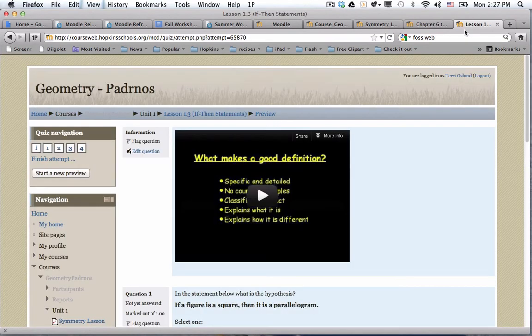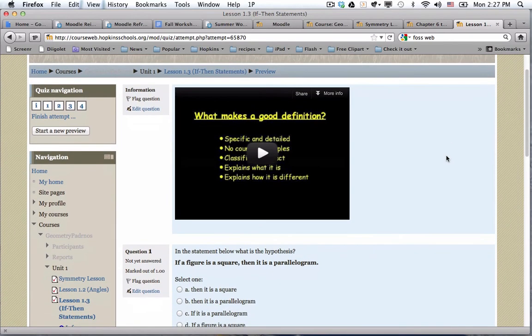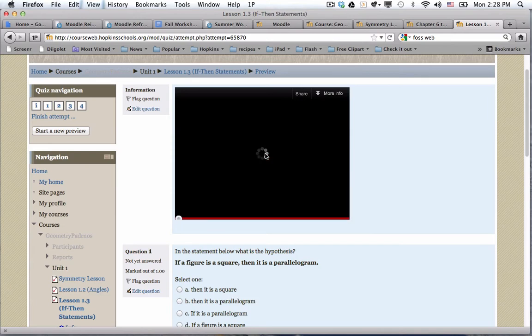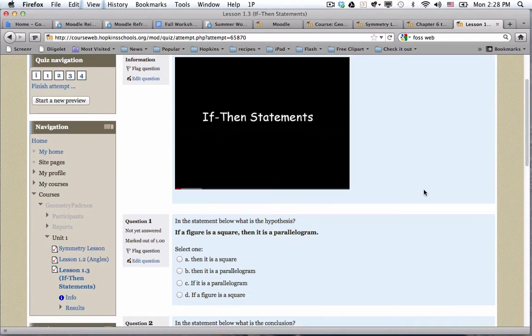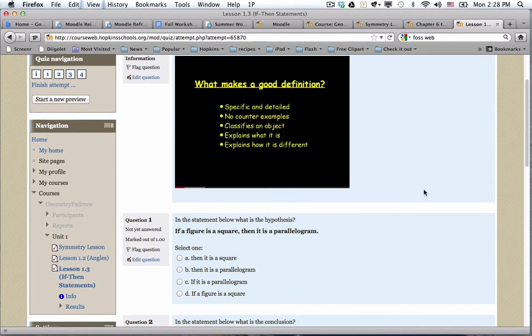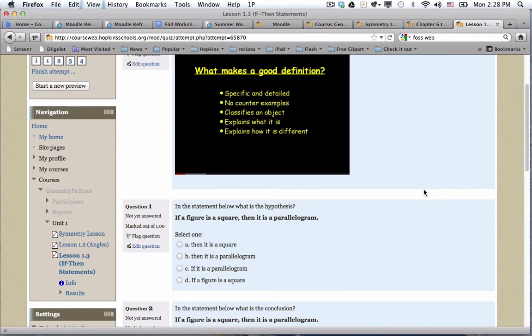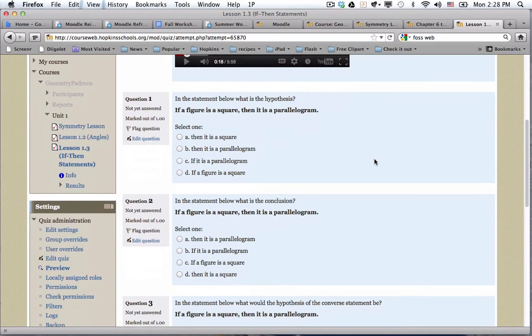And one last one here. I'll just play a few seconds of Tony's. In this lesson, we're going to talk about what makes a good mathematical definition and how do we write them in an if-then statement. So first, let's talk about what makes a good definition. A good definition is specific and detailed. I think you'll get the idea there.